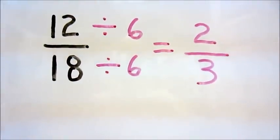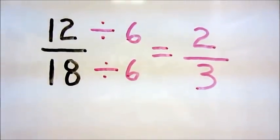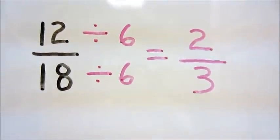In this case, the greatest common factor is 6. We divide 12 by 6 to get 2, and 18 by 6 to get 3, for a simplified answer of 2/3.